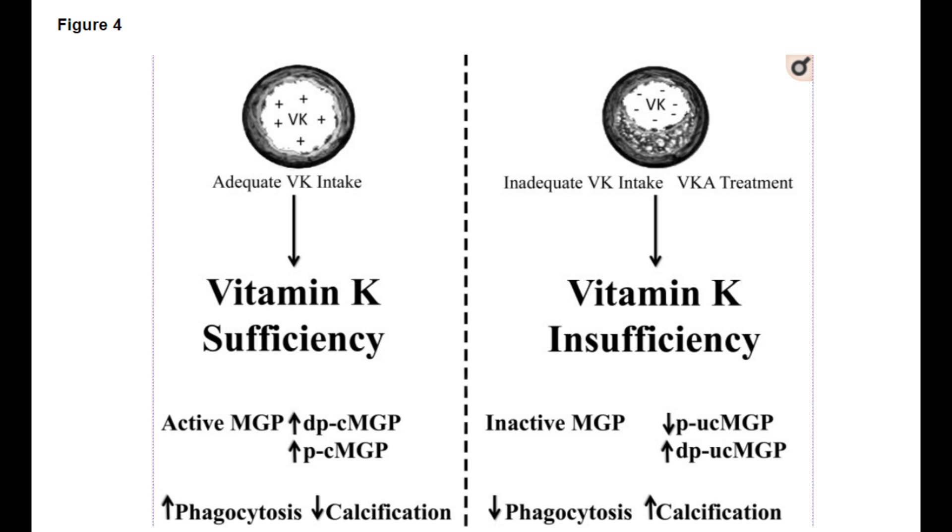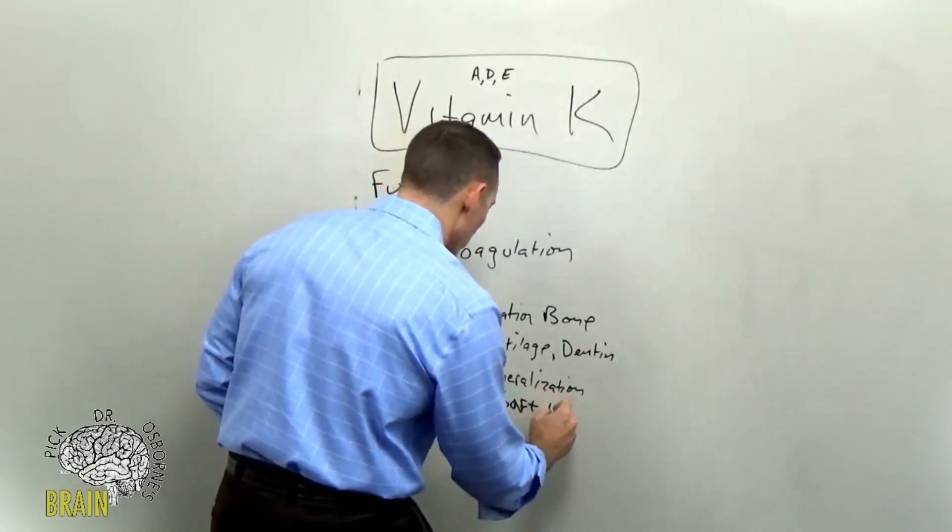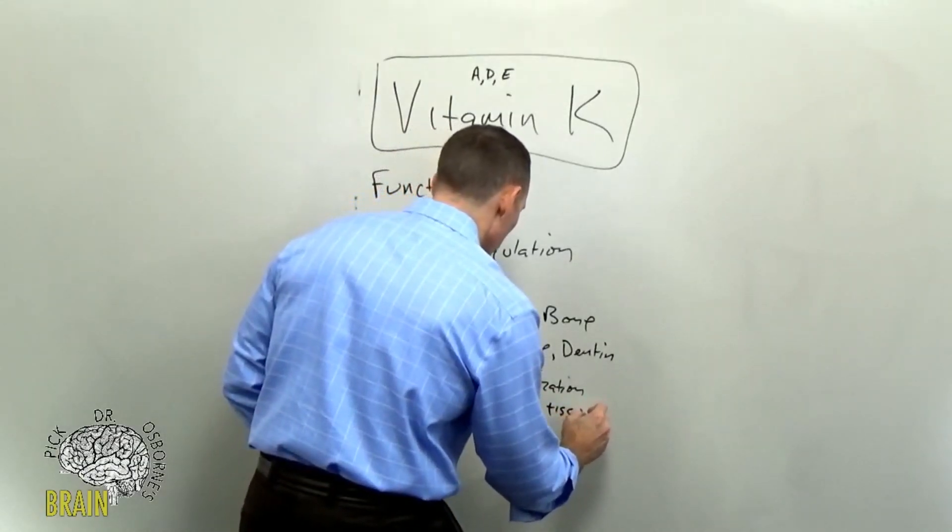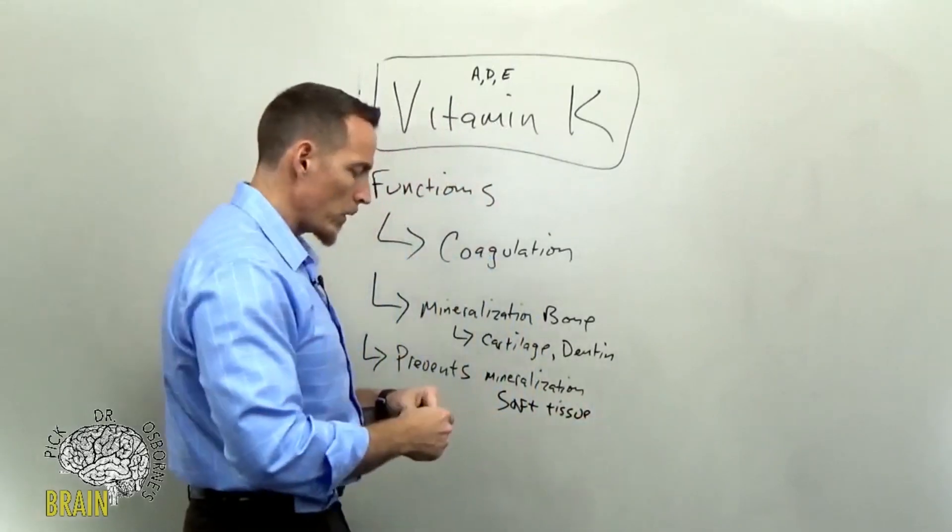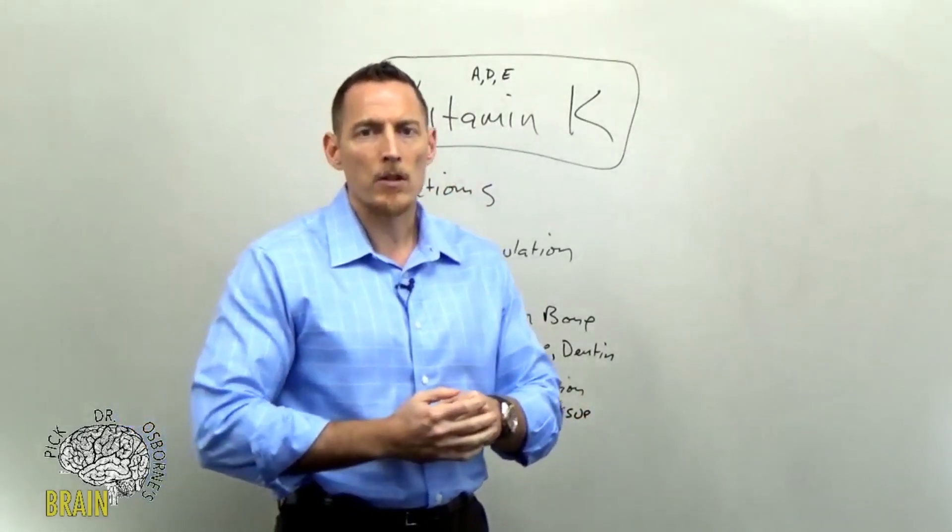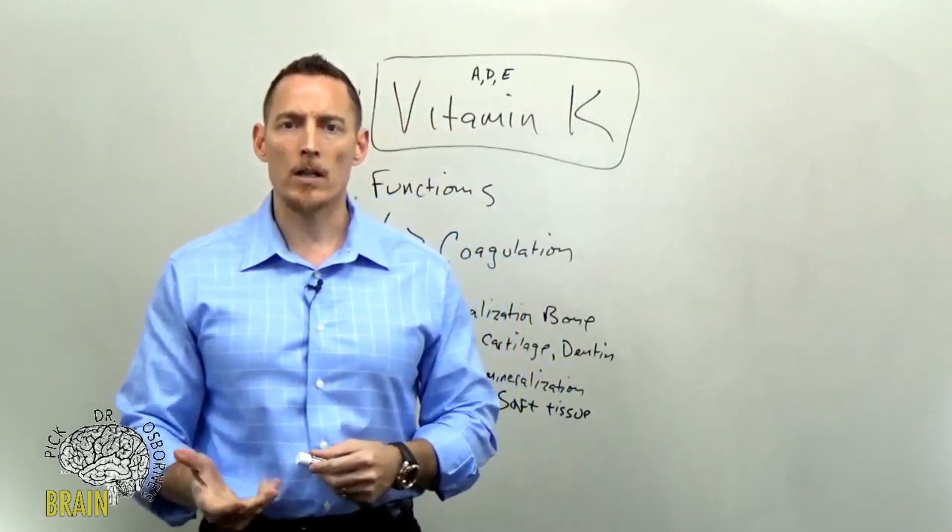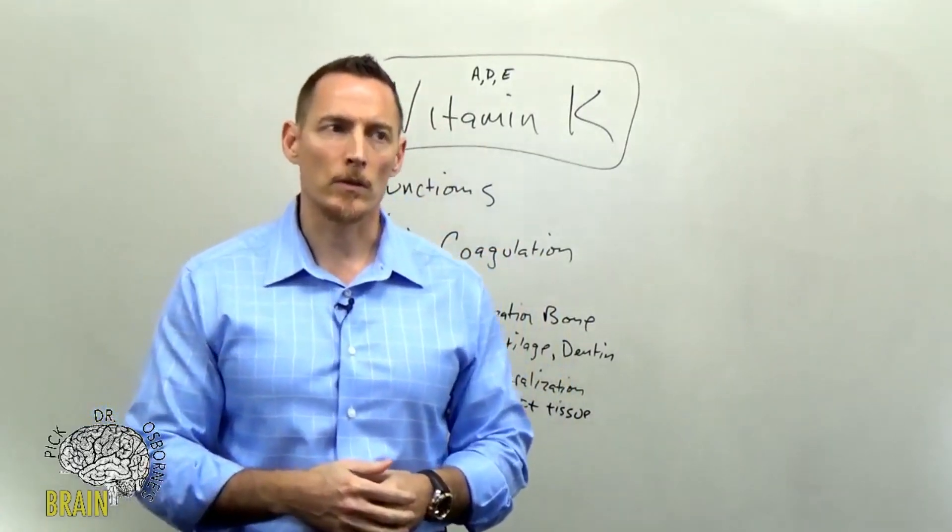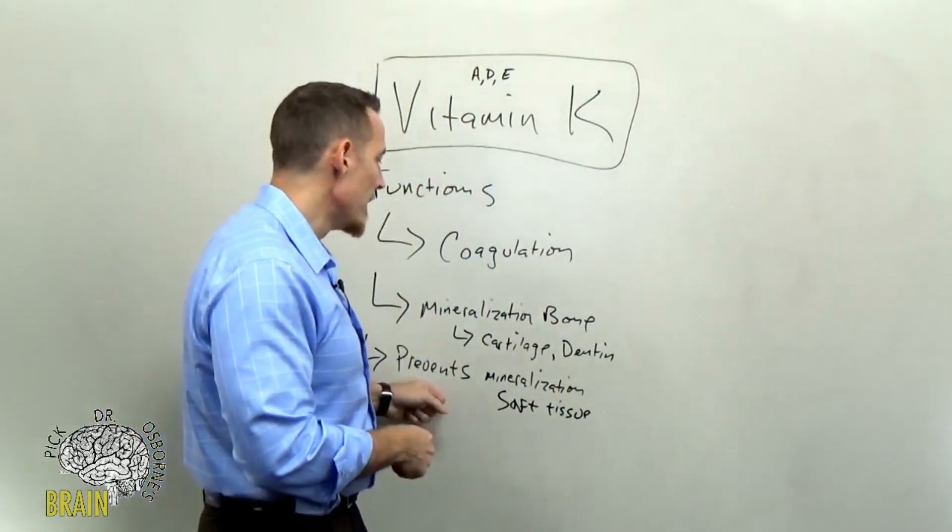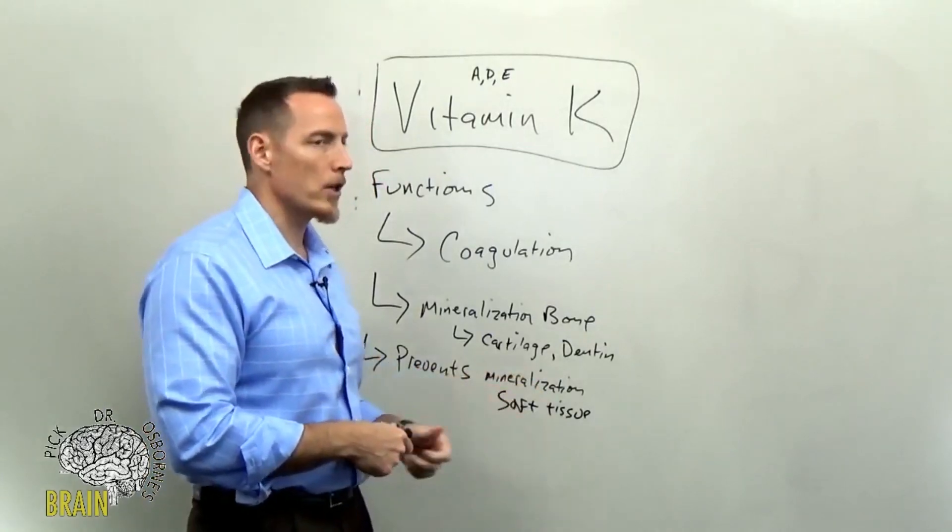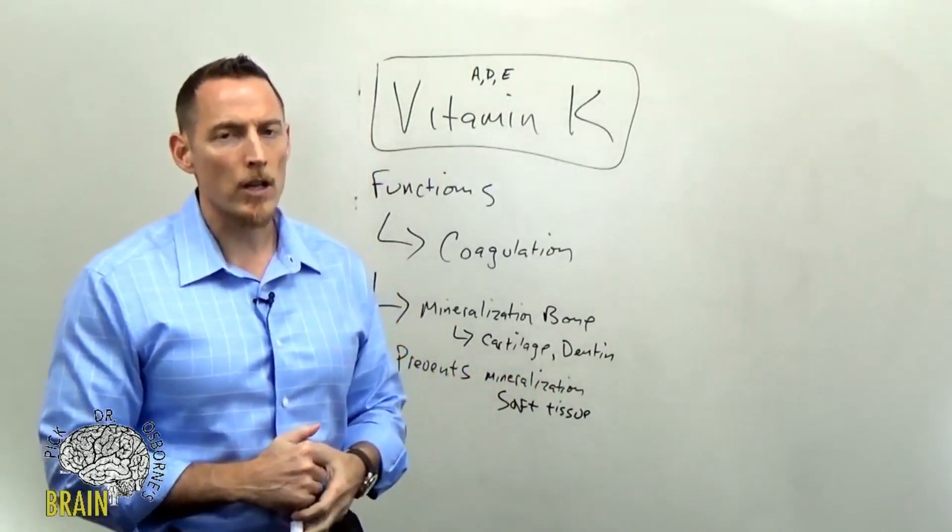we now know that vitamin K helps to prevent calcium deposition in blood vessels. Well, that's an example of vitamin K's function in preventing mineralization of soft tissue. Your blood vessels are a form of soft tissue. So we don't want calcium deposits. We don't want mineral deposits going into locations that don't belong. And your blood vessel is certainly one of those locations. So again, one of the functions of vitamin K is in the prevention of mineralization of your soft tissue.